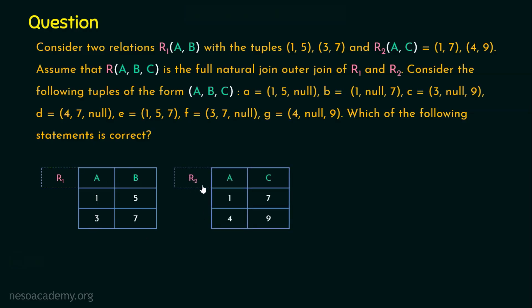Similarly, relation R2 contains A, C as the attributes with tuples (1, 7) and (4, 9). Now what we will do? Instead of formulating the actual output for R, we will perform R1 full natural outer join with R2. We will get R as output.